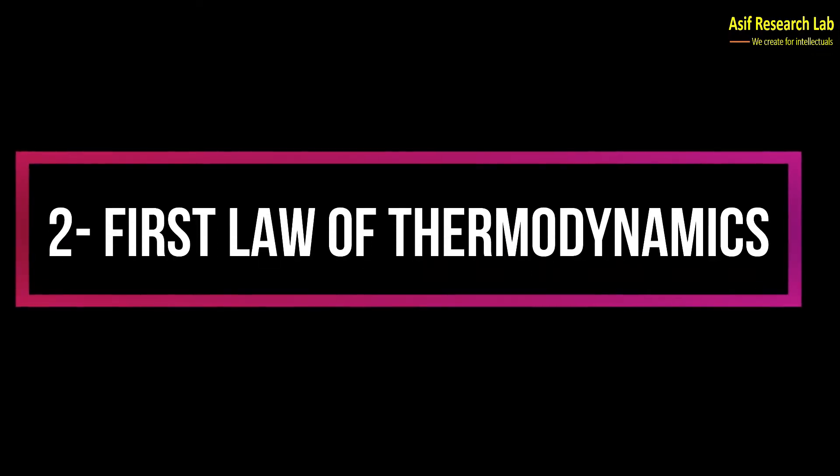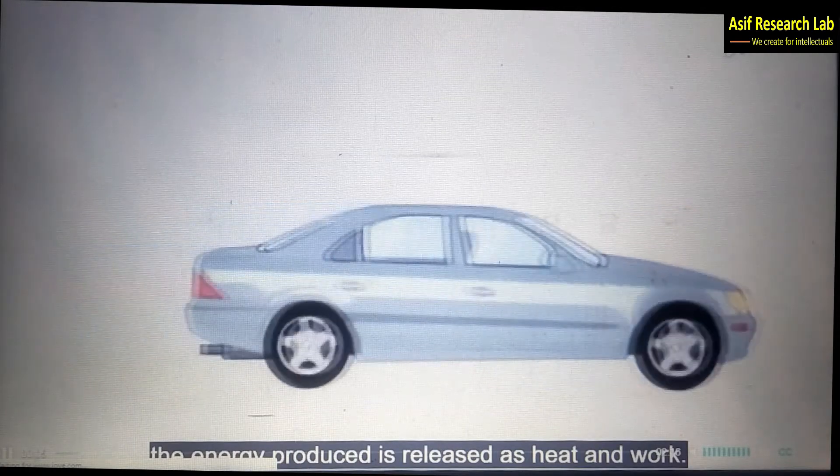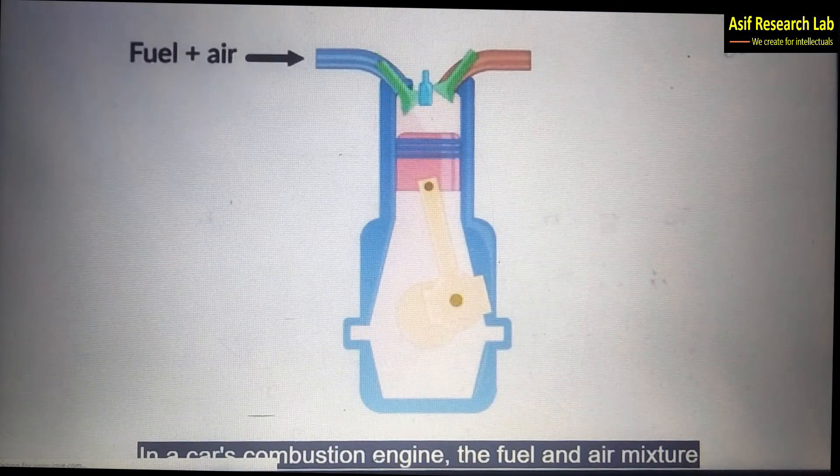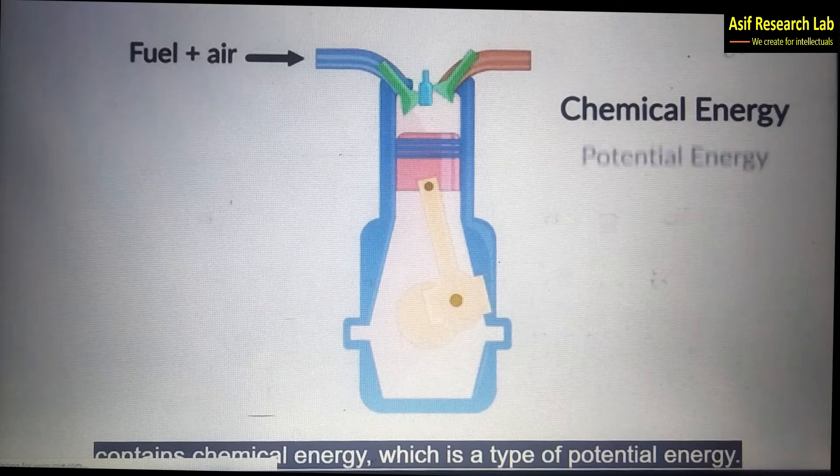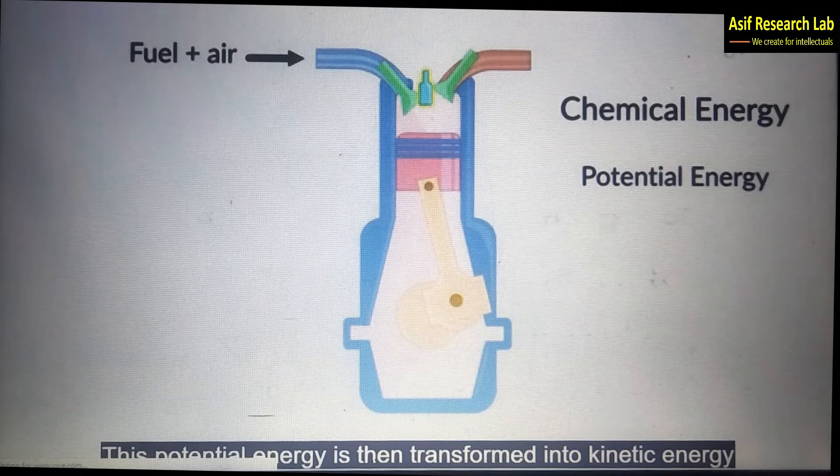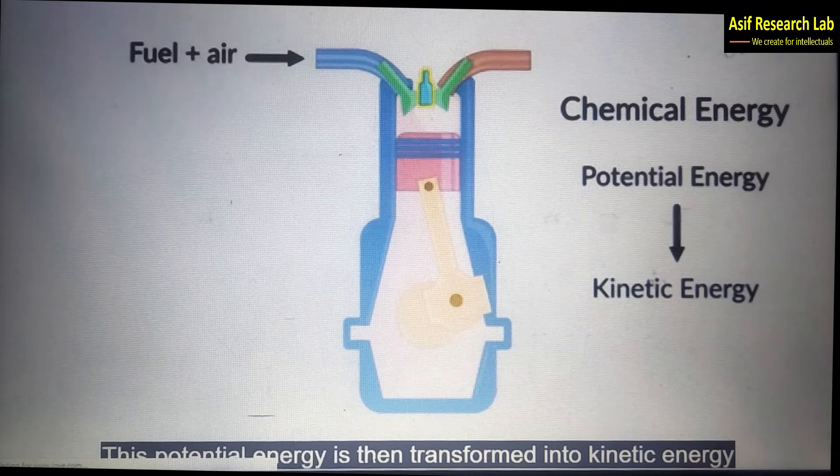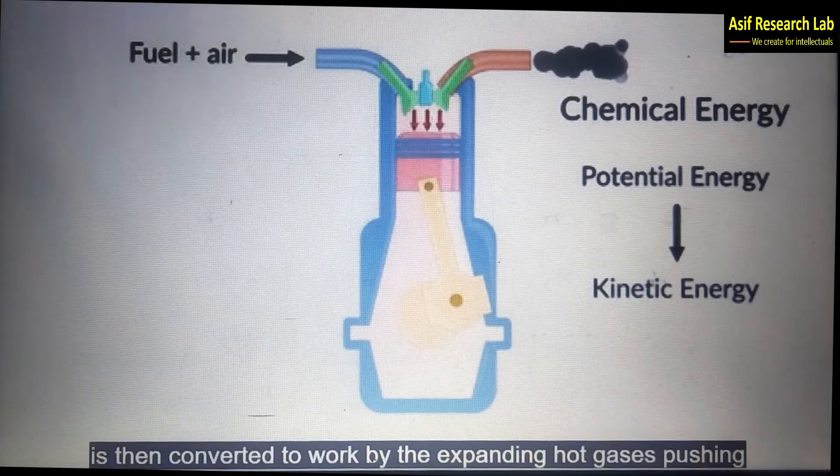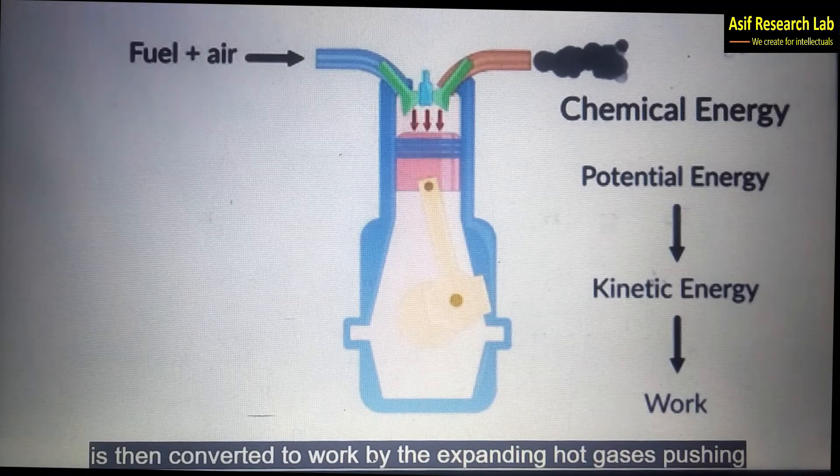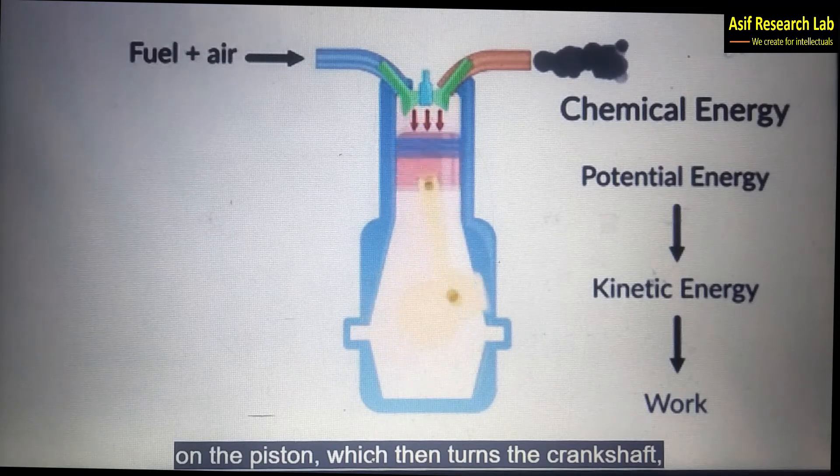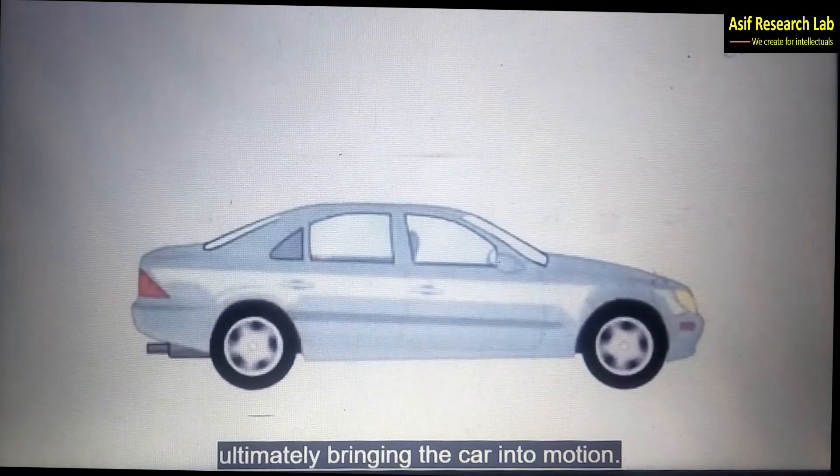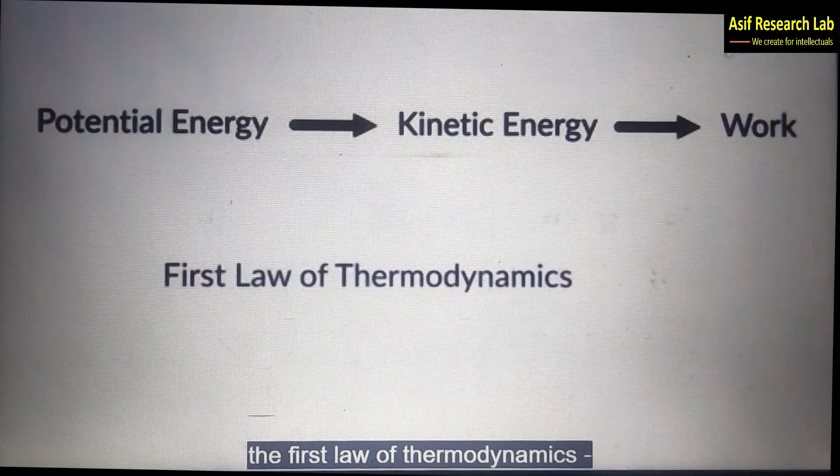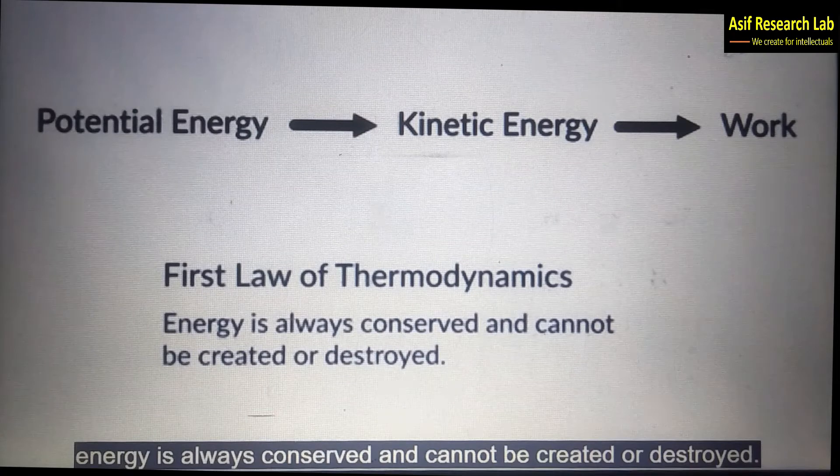First law of thermodynamics: When gasoline fuels a car engine the energy produced is released as heat or work. In a car combustion engine the fuel and air mixture contains chemical energy which is a type of potential energy. This potential energy is then transformed into kinetic energy through a combustion reaction that generates heat. The heat coming from the reaction is then converted to work by expanding hot gases pushing on the piston which then turns the crankshaft, ultimately bringing the car into motion. All these energy interconversions must follow the first law of thermodynamics: energy is always conserved and cannot be created or destroyed.